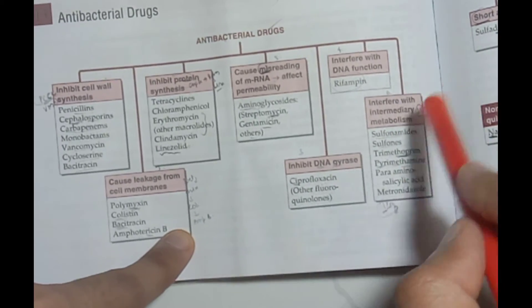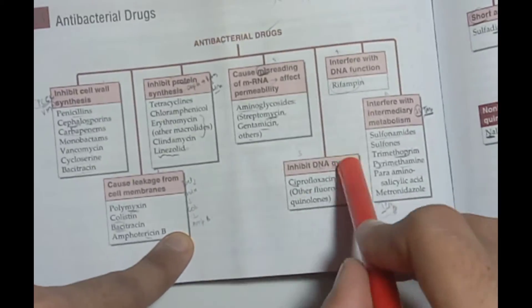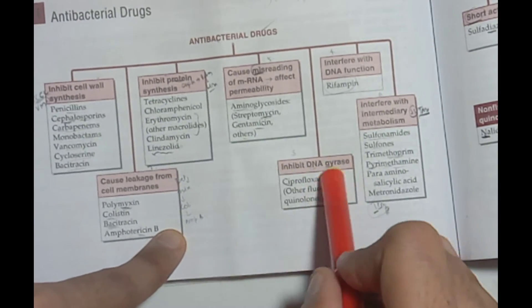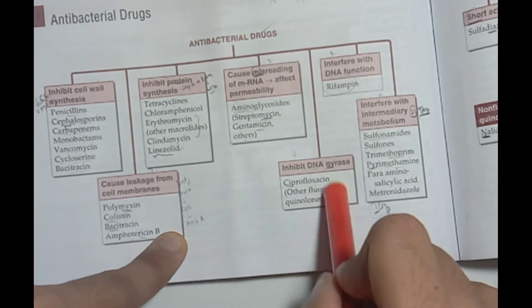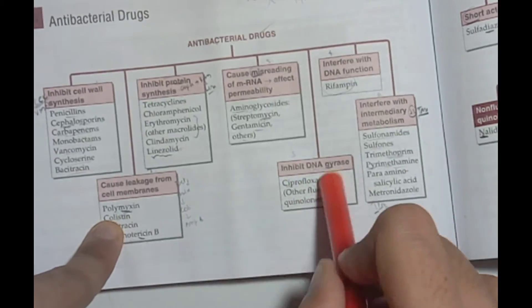DNA Gyrase inhibitors: Fluoroquinolones like Ciprofloxacin.